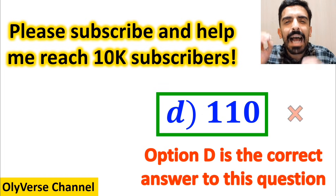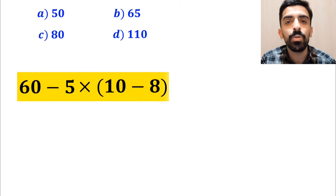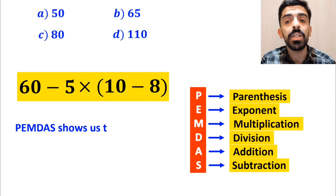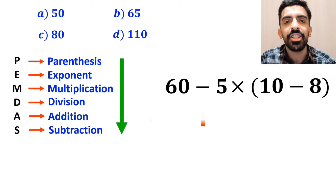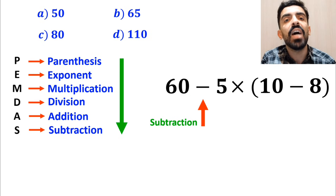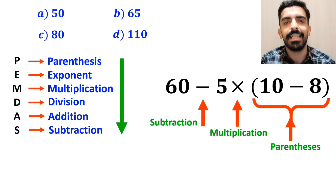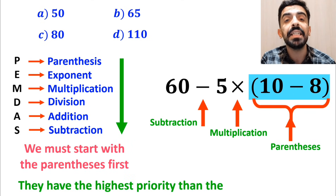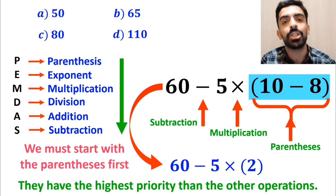But this answer is absolutely wrong. To solve this question we need to follow the PEMDAS rule step by step. PEMDAS shows us the priority of the order of operations. As you can see in the image, this expression has a subtraction sign, then a multiplication sign, and finally parenthesis. We must solve the parenthesis first because they have the highest priority. So we rewrite this expression as 60 minus 5 multiplied by 2.